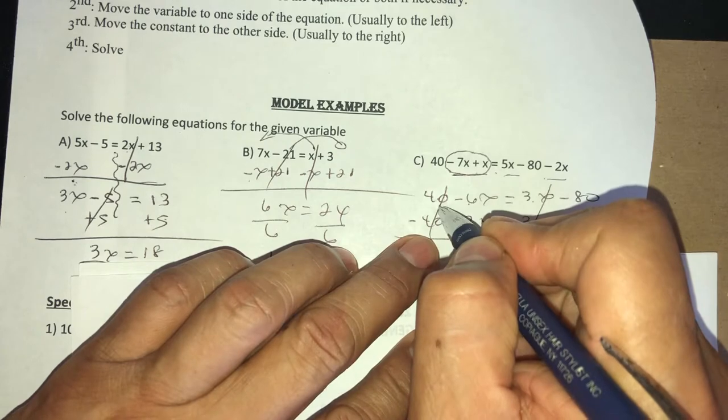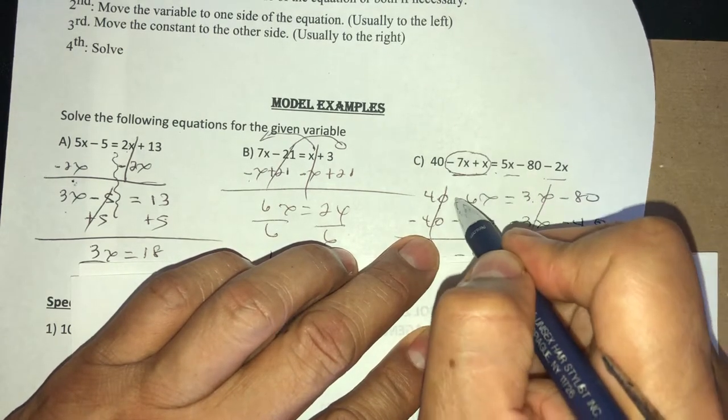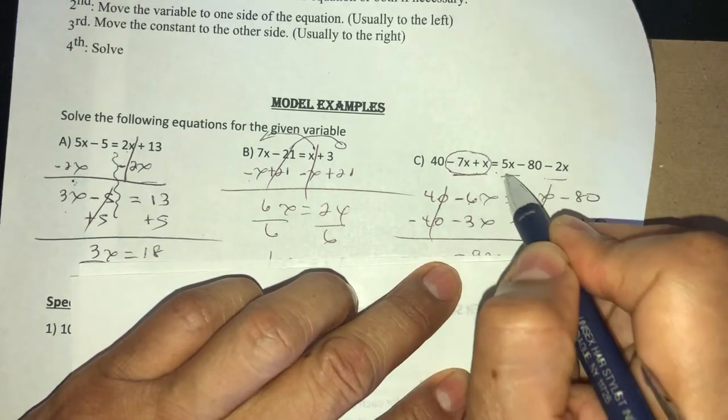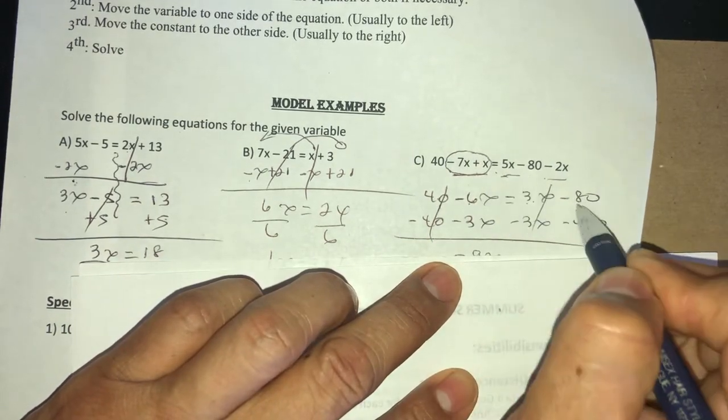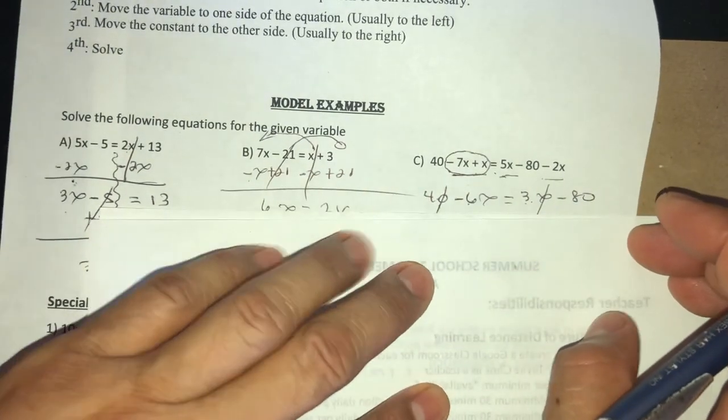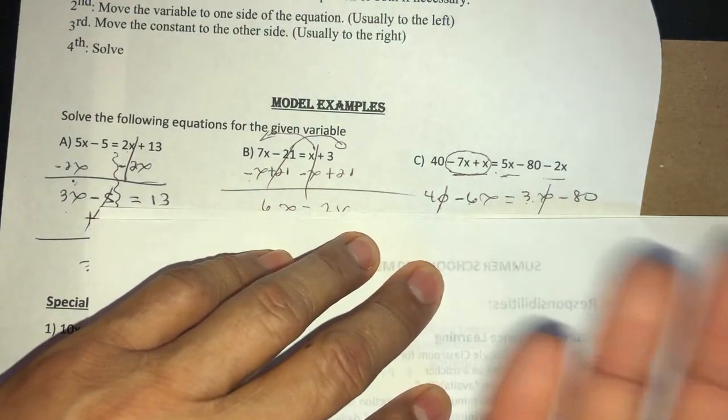Here the family that we have is only these two, so I'm gonna bring down the 40. When I subtract negative 7 plus 6, I will get negative 6x. When I combine these two here, 5 minus 2, I get 3x, and I bring down the negative 80. That was the first step I did.